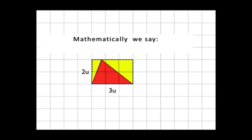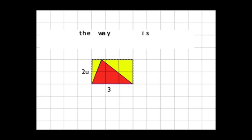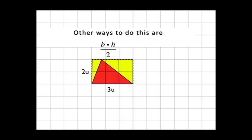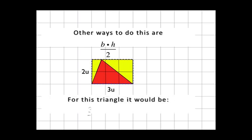So mathematically, we say that as one half of the base times the height equals the area of the triangle. Some other ways to do this are saying base times height divided by 2. What that looks like for this triangle is 3 units times 2 units divided by 2, or 6 units divided by 2 equals 3 units squared.